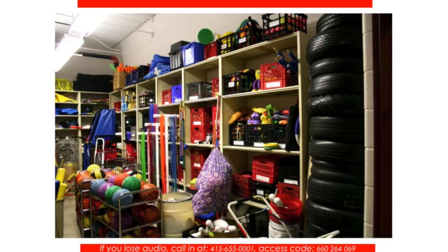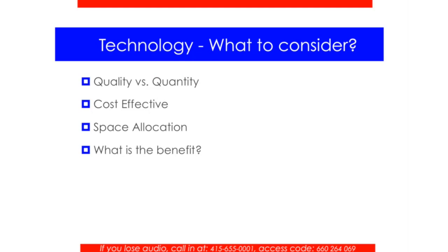The four components of our conversation today: we're going to talk about choosing quality versus quantity, the cost effectiveness of the technology you would consider, space allocation, and what is the actual benefit of why you're choosing the technology. At the very end, I will go through some ideas about financial opportunities and ways of earning money to afford some of the technologies that might seem out of range for you.